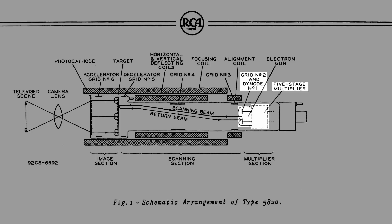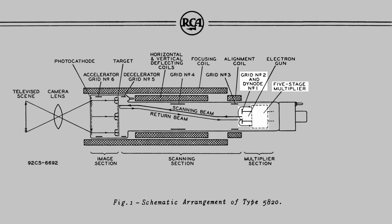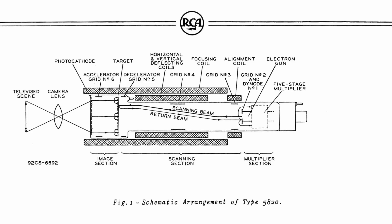The multiplier section amplifies the modulated beam about 500 times. The multiplication so obtained maintains a high signal-to-noise ratio and also permits the use of an amplifier with fewer stages. The gain of the multiplier is such as to raise the output signal sufficiently above the noise level of the video amplifier stages so they can contribute no noise to the final video signal.